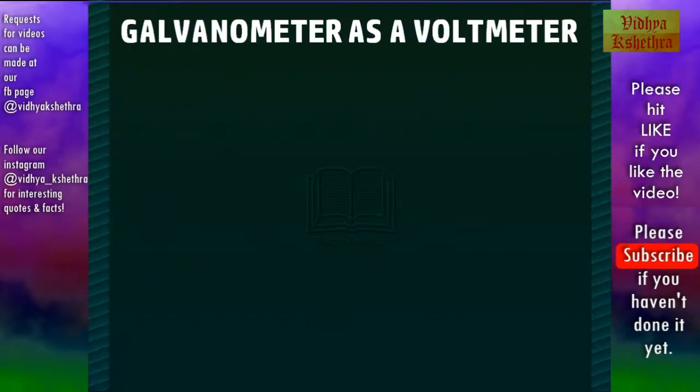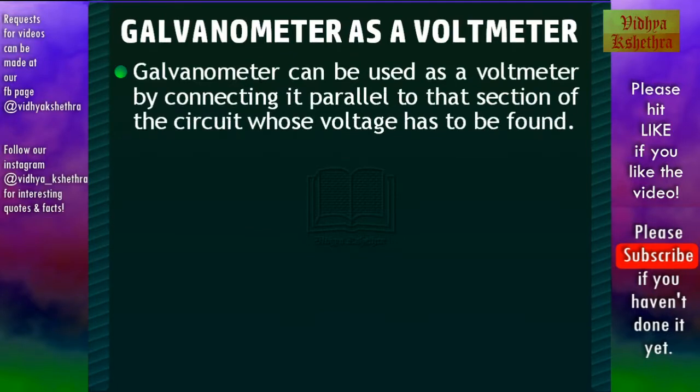Now we shall see galvanometer as a voltmeter. Galvanometer can be used as a voltmeter by connecting it parallel to that section of the circuit whose voltage has to be found. In this case also we have to make an adjustment.